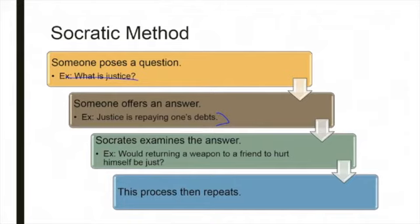You have a situation here where, if justice is repaying one's debt, it would seem the just thing to do would be to return the weapon to the friend. But is it really just to give your friend a weapon that you know he's going to use to do harm to himself or to someone else?